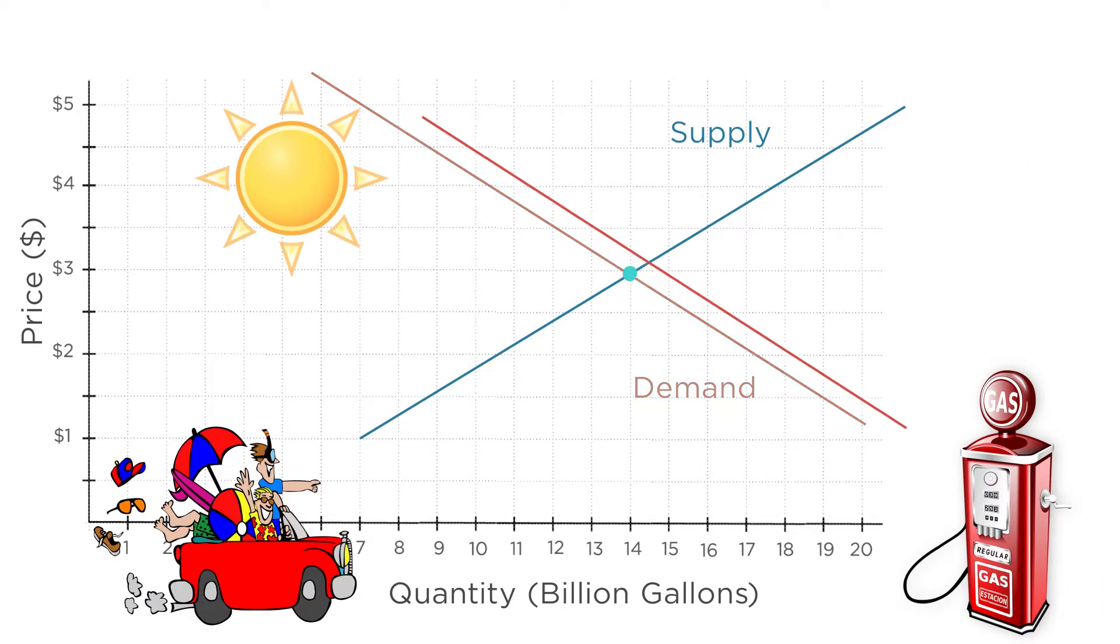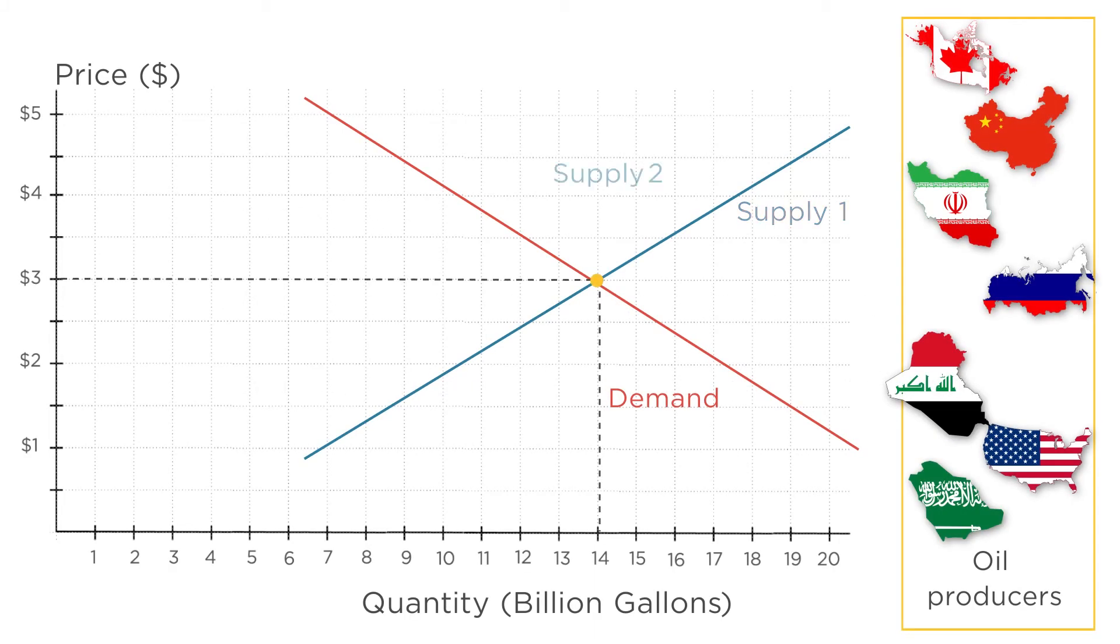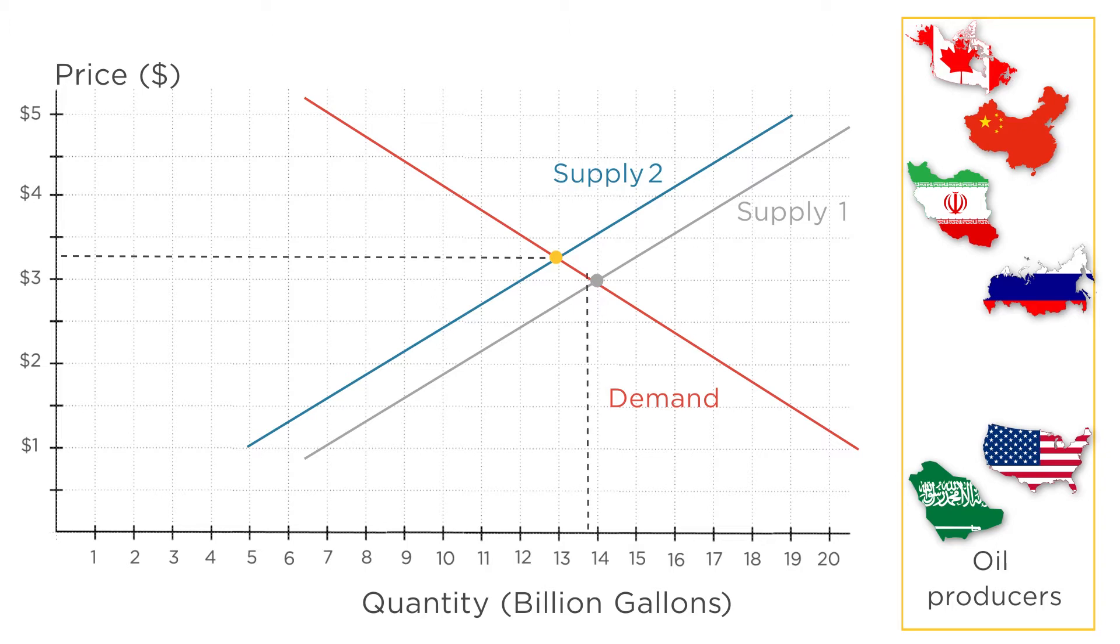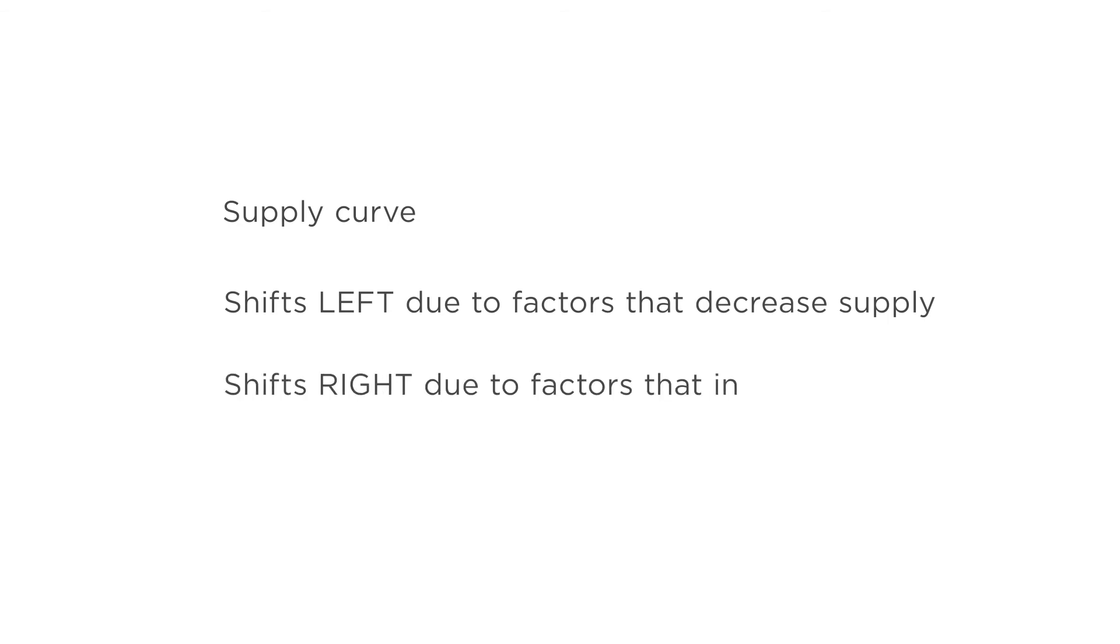When the demand curve shifted up because it was summertime, prices rose, and the quantity of gas produced also rose. In general, the demand curve shifts up due to factors that increase demand and down due to factors that decrease demand. But when the supply curve shifted left because an oil producer dropped out, prices rose, just like in the case the demand curve shift. But unlike in that case, the quantity of gas produced actually fell. Well, think about a supply curve shifting left due to factors that decrease supply. Think left is less. And that means the supply curve will shift right due to factors that increase supply.